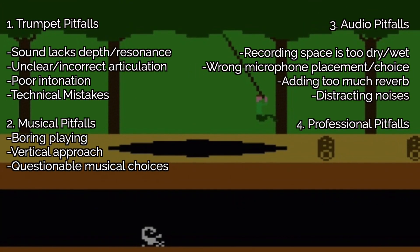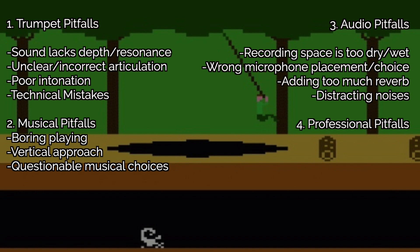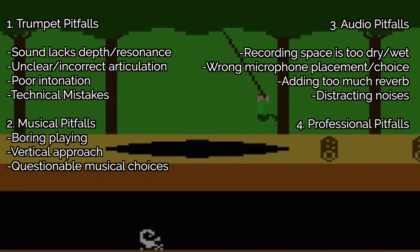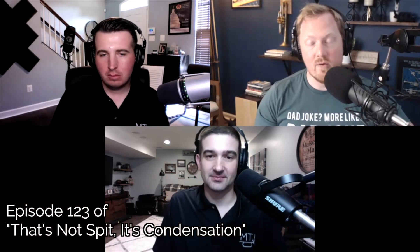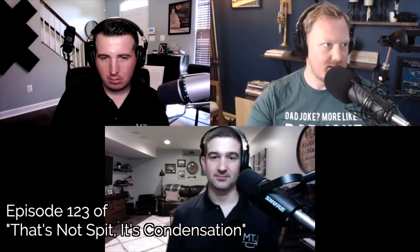The 11 pitfalls are going to be split up into three different categories: one is trumpet-related pitfalls, two is musical-related pitfalls, and three is audio-related pitfalls. Then we're going to come back after that with a fourth category of professional pitfalls, and we'll hear a conversation that Kevin, Ryan, and I had on a podcast episode about how some of these professional things can hinder us as well.